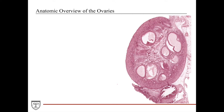Looking at the ovaries at macroscopic scale, each ovary is covered on the outside by a fibrous connective tissue capsule called the tunica albuginea. It's not quite as well-defined or clear in the ovaries because it is not as thick or dense as it is in the testes. This structure is comprised of dense irregular connective tissue and forms a capsule-like structure for the ovaries. The parenchyma of the ovaries are subdivided into the outer cortical layer and the inner medulla.